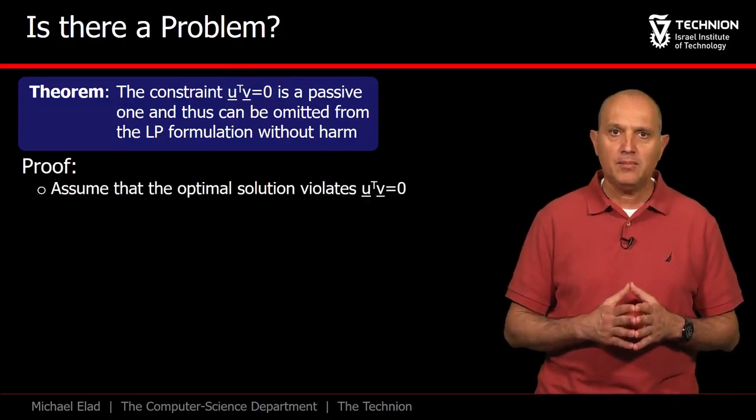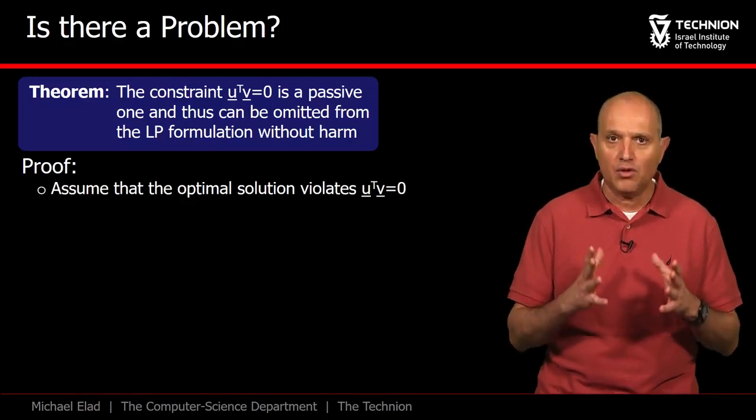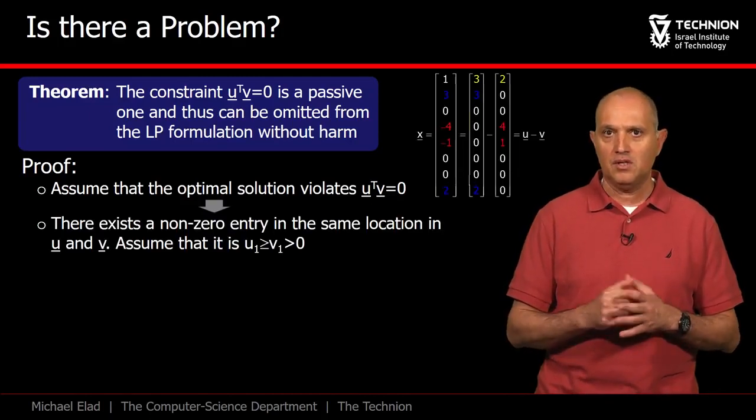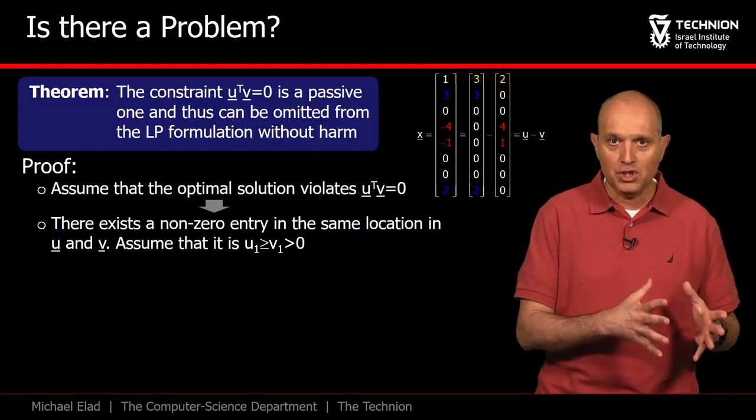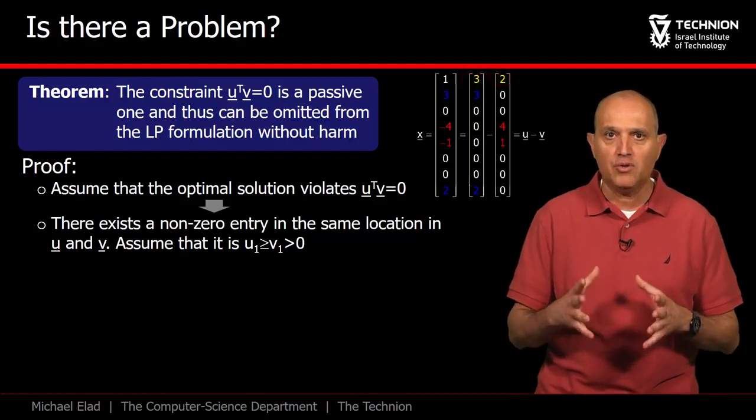Assume that we have found the optimal solution, and it violates the orthogonality condition. This implies that there is an overlap in the supports of u and v. That is, at least in one location, both have a non-zero value.